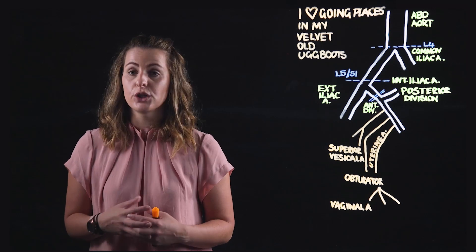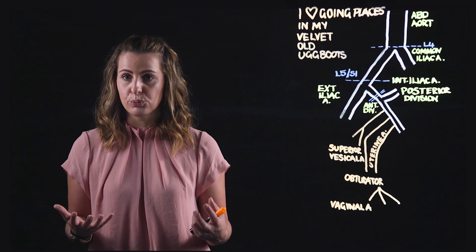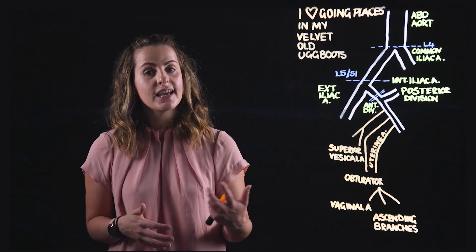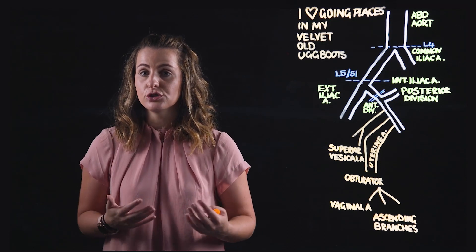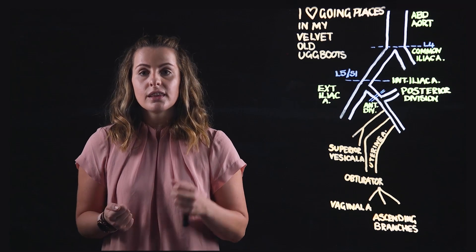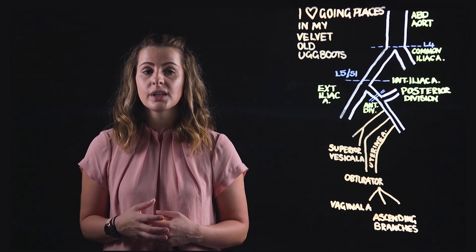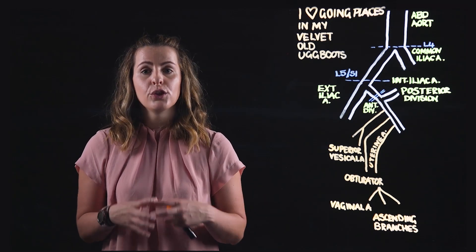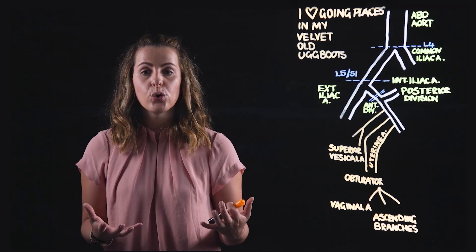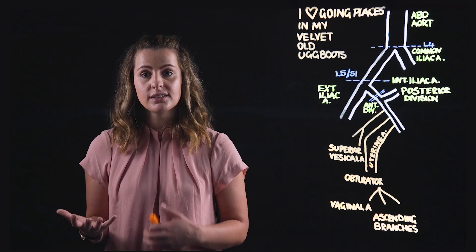The next branches from the uterine artery are the ascending branches, which further divide into ovarian and tubal branches that anastomose with the ovarian artery. The ascending artery ascends up the lateral margins of the uterus, supplying the body, fundus, and inferior portions. The ovarian and tubal branches contribute to blood supply of the medial third of the uterine tube including the isthmus, and to the ovary through the anastomotic network. The descending branches — also called vaginal branches — descend to supply the cervix and superior vagina.